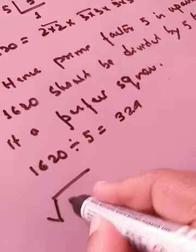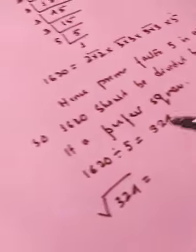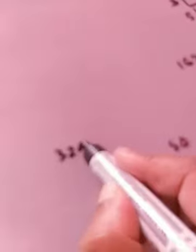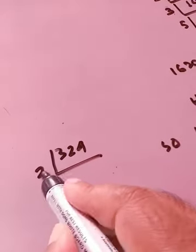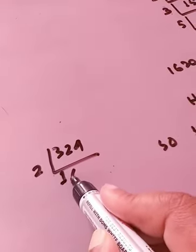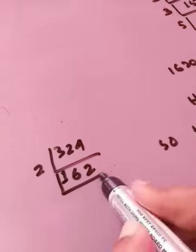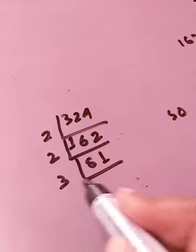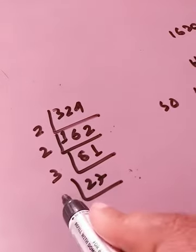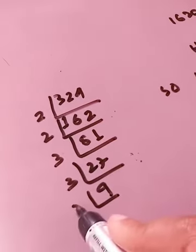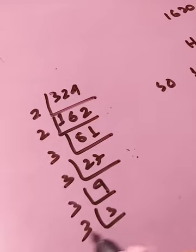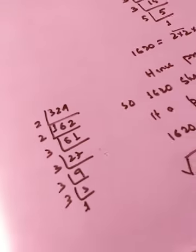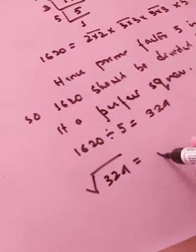Okay now let us check whether 324 is a perfect square or not. For that we have to go for prime factorization. So 2|324, 2|162, 2|81, 3|27, 3|9 and 3|3, 3|1.